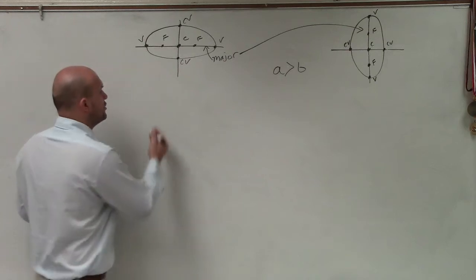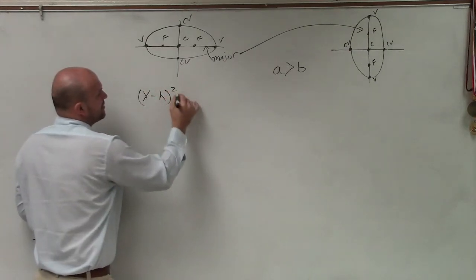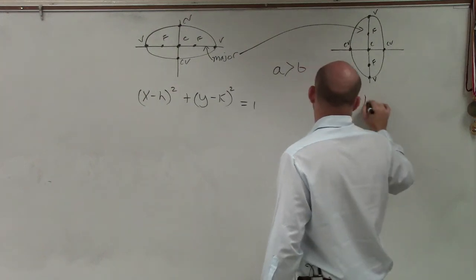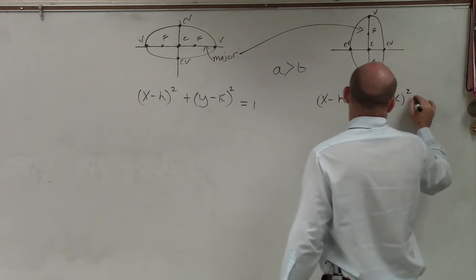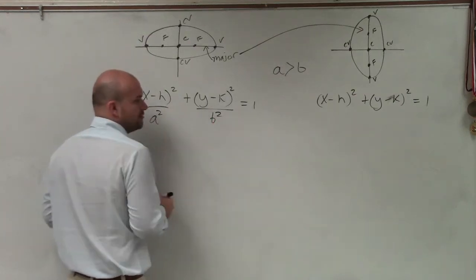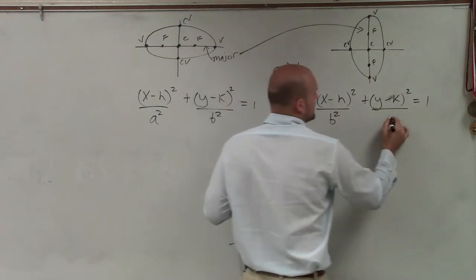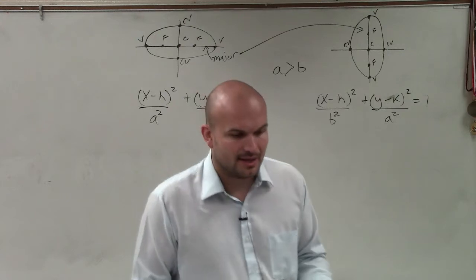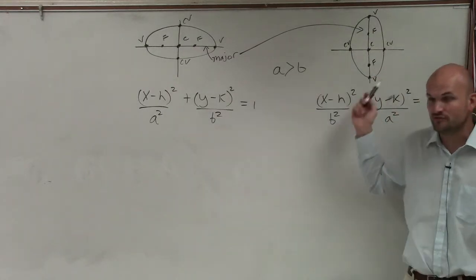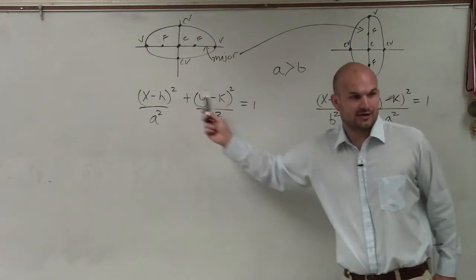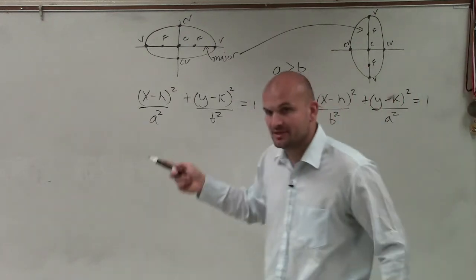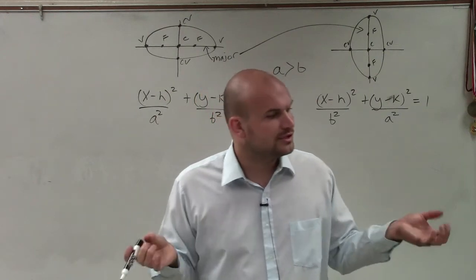So to determine if it was horizontal or vertical, we looked at where a was. We always had x minus h squared plus y minus k squared equaled 1 for both formulas. To determine if it was horizontal, the a squared was always under the x and the b squared was under the y. If it's vertical, then the b squared was under the x and the a squared was under the y. The only difference between these two formulas is that a is under the x for horizontal and a is under the y for vertical, and a was always larger than b.